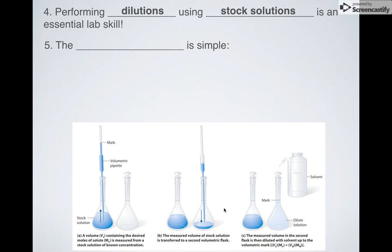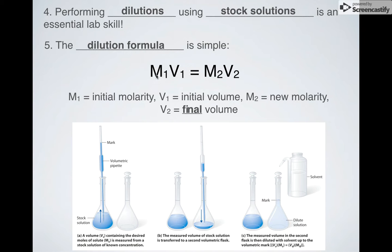So when you're performing dilutions, which is an essential lab skill that pretty much everybody in chemistry has to learn, you use the dilution formula. The dilution formula is the molarity of whatever you started with times the volume of whatever you started with equals the new molarity when you diluted it to a new volume. So M1 is your initial concentration in molarity, V1 is your initial volume, M2 is your new molarity when you're done diluting it, and V2 is the final volume.